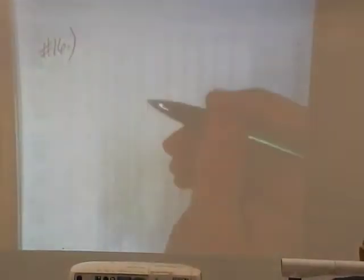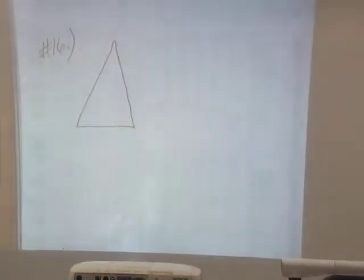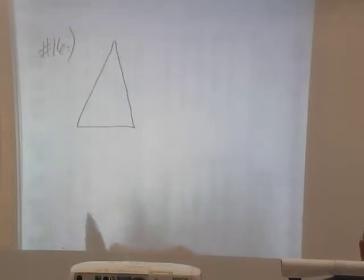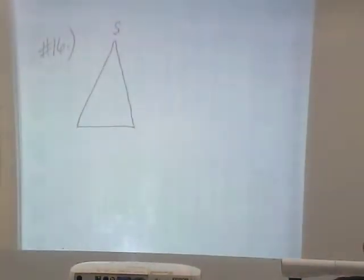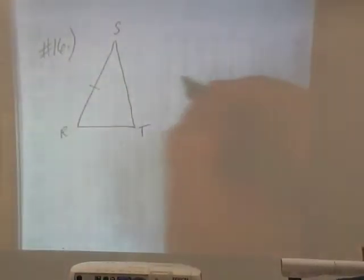Alright, given triangle RST, isosceles, with side RS equal to side ST. Which point did they mention twice there? S. Make sure that's your vertex angle. The other two are your base angles. So, R and T. You'll see how that works. RS will be congruent to ST.